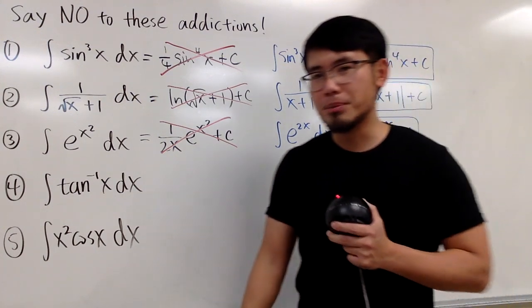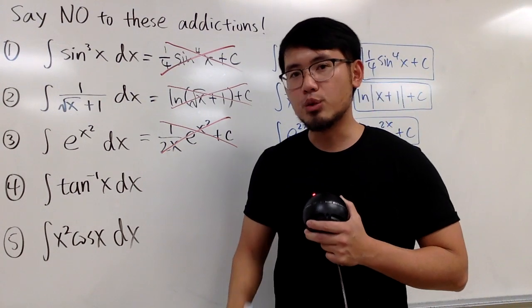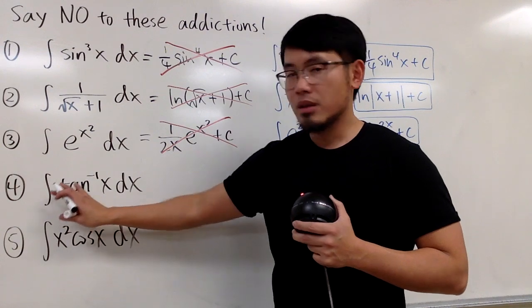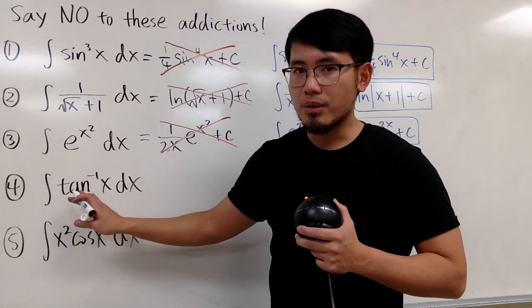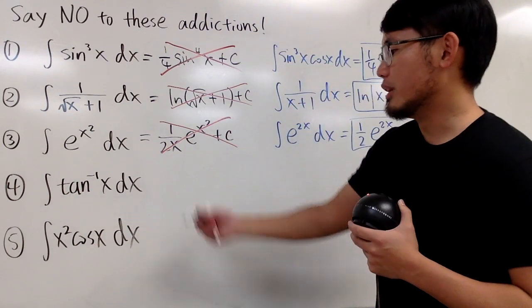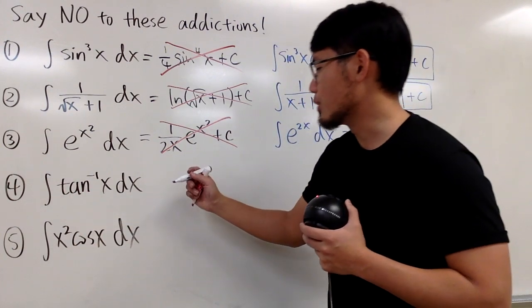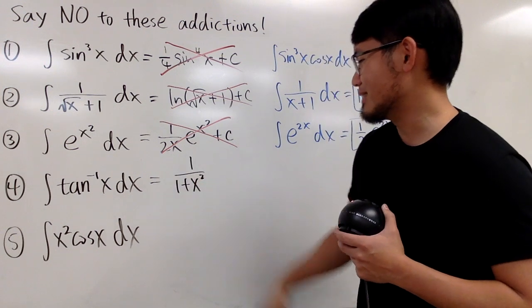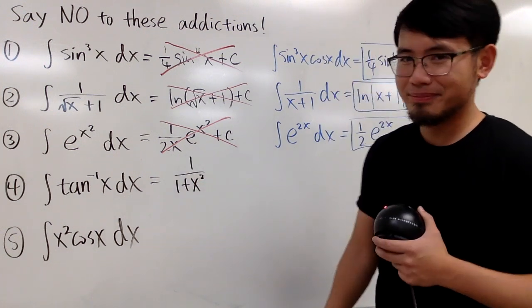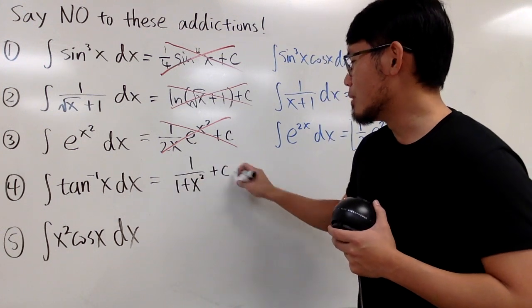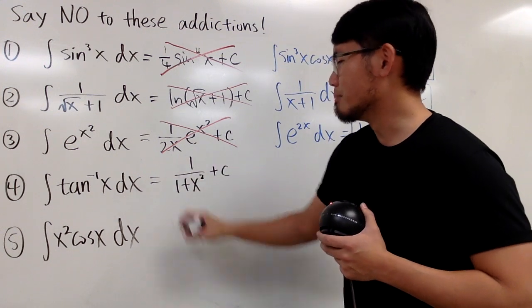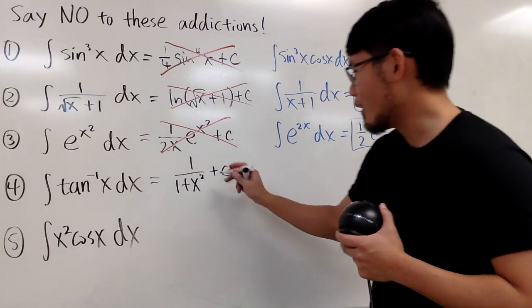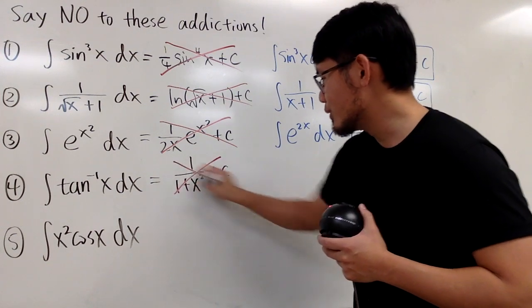Next one: some people don't want to face the reality of doing the integral — they just want to do the derivative. They look at the integral of 1 over 1 plus x squared and want to put down 1 over 1 plus x squared as the answer. And yes, they still remember the plus c, but no — don't do this.